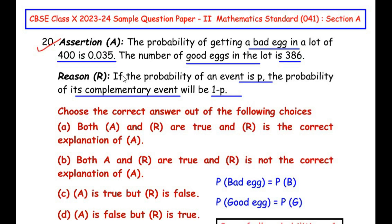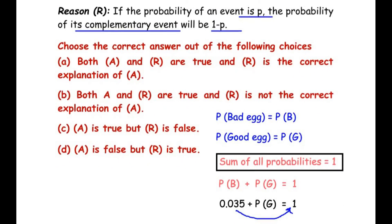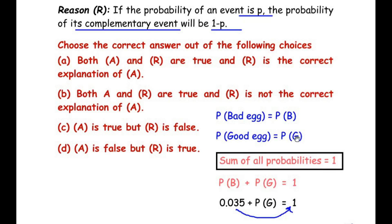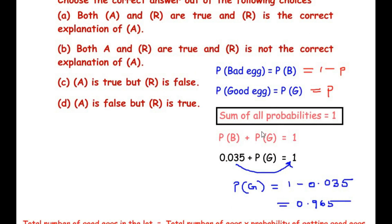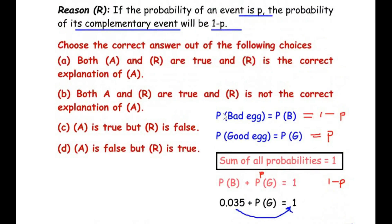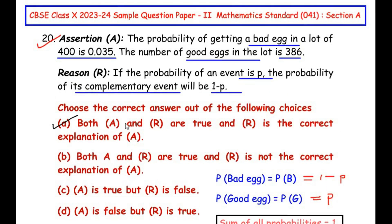Now let us look at the reasoning. If the probability of an event is P, the probability of its complementary event is 1 - P. In this question, if we take the probability of getting a good egg as P, then the probability of its complementary event — getting a bad egg — is 1 - P, because the sum of all probabilities equals 1. The reasoning is also true, and we made use of this same concept. So the answer is A: both assertion and reason are true, and the reason is the correct explanation of the assertion.